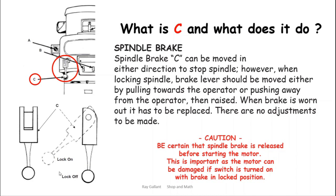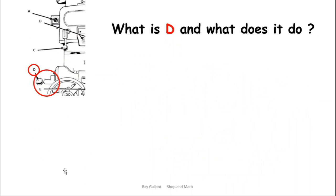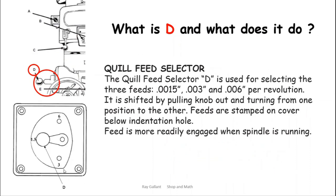D: what does this do? Quill feed selector. When you turn your quill feed on you can select either six thou per revolution, three thou per revolution, or one and a half thou per revolution. Not all of them have the six, the three, and the 1.5. Some will say high, low, and medium.